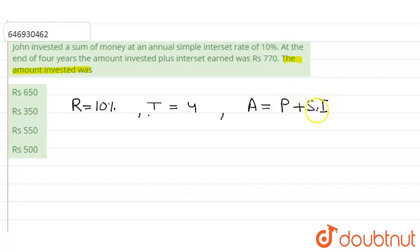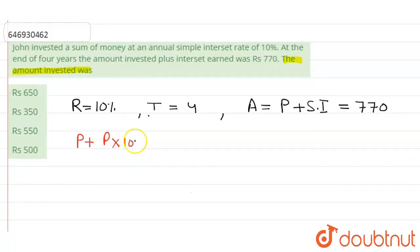Principal amount is 770. So with the simple interest formula, we start. This amount is 770, so P plus S.I., where S.I. is P into R into T upon 100, R is 10 and T is 4, equals 770.